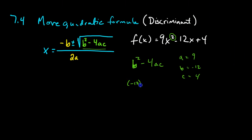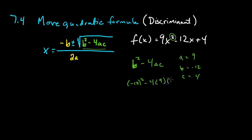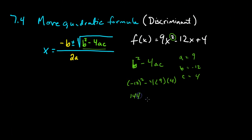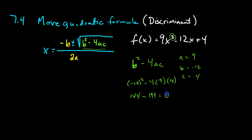So we've got negative 12 squared minus 4 times a, which is 9, times c, which is 4. So that number squared is 144 minus 36 times 4, which is 144. And the discriminant here is 0. So what does that tell us?